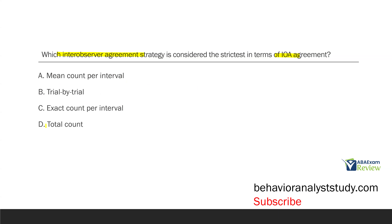But what's even more strict is the exact count per interval. With exact count, we take precisely how many data points were recorded and compare them to each other — and it's only counted as IOA if they match exactly. So the strategy that's going to be strictest is exact count per interval.